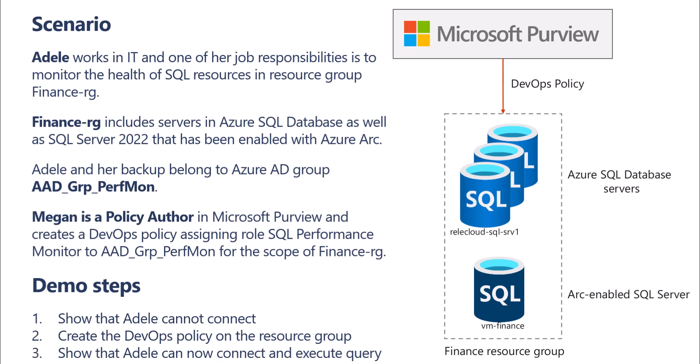I'm going to make Adele part of an Azure AD group called 'AD group performance monitor.' Megan is going to be the policy author in Microsoft Purview and she'll grant access to this AD group for the particular and limited role that lets Adele monitor the performance of these SQL data sources. The demo will cover: first showing that Adele cannot connect, then creating the DevOps policy on the whole resource group, and then showing that Adele can connect and execute the queries.